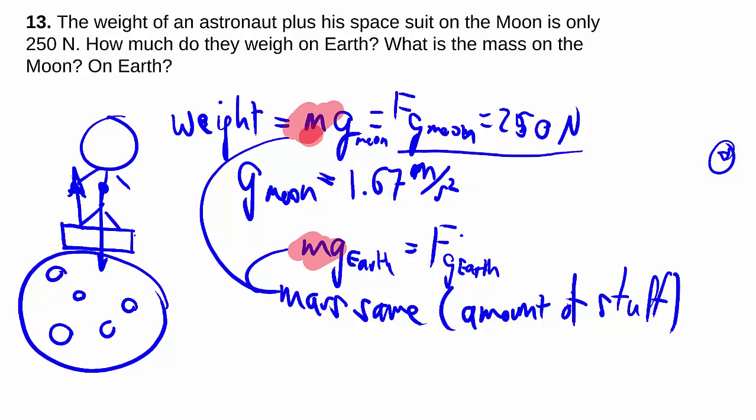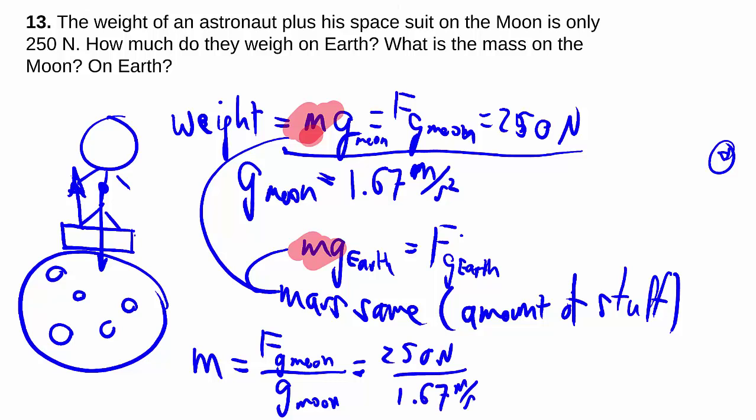So I can solve for mass up here, and then plug it into my earth weight. We can shuffle this around and get that. We've got 250 newtons divided by 1.67 meters per second squared, giving us that number. Again, keeping a few more sig figs.